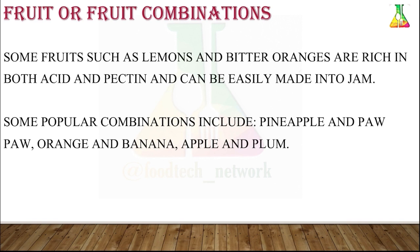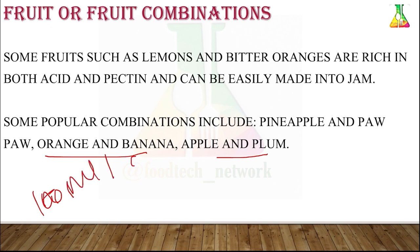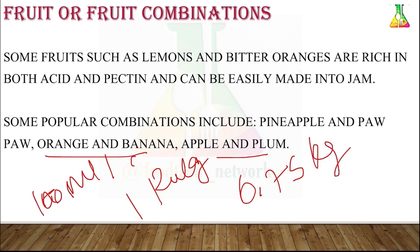There are many fruit combinations — for example, orange and banana jam, or apple and plum jam. For apple jam preparation: 1 kg of apple pulp, 0.75 kg of sugar, 2 grams of citric acid, and 100 ml of water. So the requirements are 100 ml water, 1 kg pulp, 2 grams citric acid, and approximately 0.75 kg sugar.